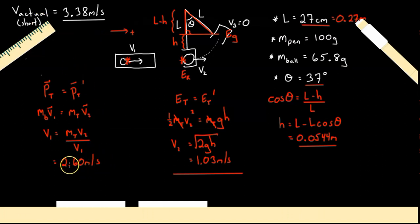Now that's not too bad. It's fairly close to 3.38. We can figure out how far off it is by finding our percent error. So our percent error is going to equal our actual value 3.38 minus what we got with our ballistic pendulum, 2.60, and then divide it by our actual 3.38.